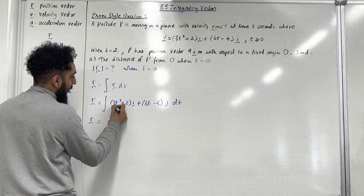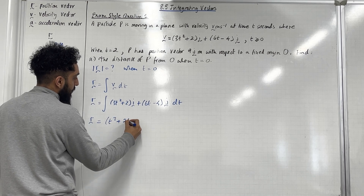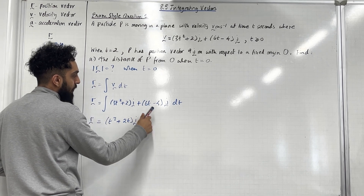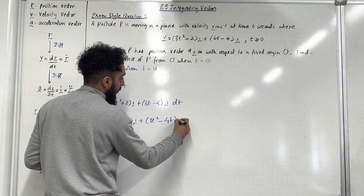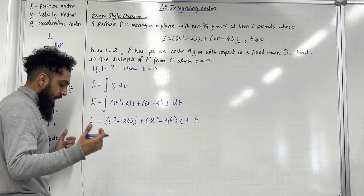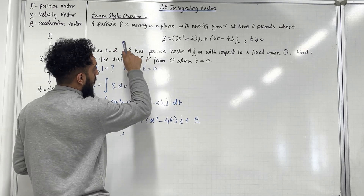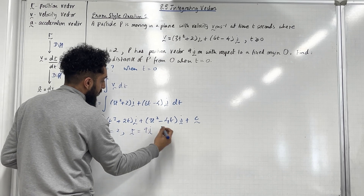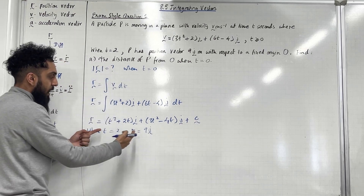So the position vector R squiggle is given by the integral of (3T squared plus 2)I plus (6T minus 4)J, DT. Integrating gives T cubed plus 2T in bracket I, plus 3T squared minus 4T in bracket J, plus C squiggle, the constant of integration. In the question, we know that when T is equal to 2, the position vector of P is 9J meters, so R squiggle equals 9J. We use this boundary condition to work out C squiggle.